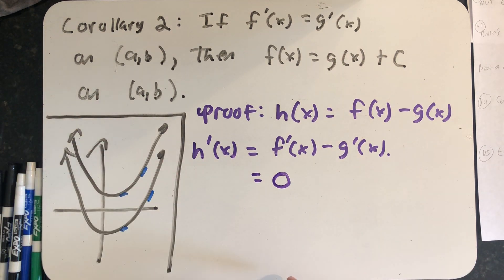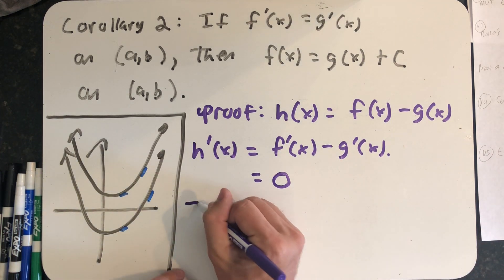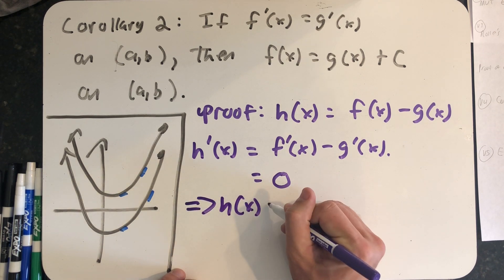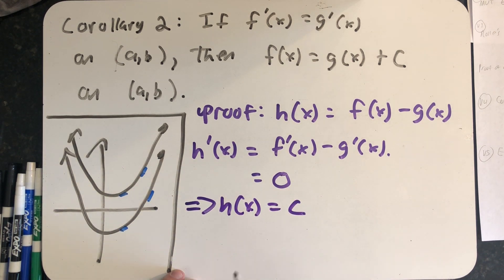So my new function's derivative is always zero on the open interval (a,b). So the first corollary of the mean value theorem applies to this, and h(x) has to be a constant over my interval. So h(x) is always a constant on this interval (a,b).